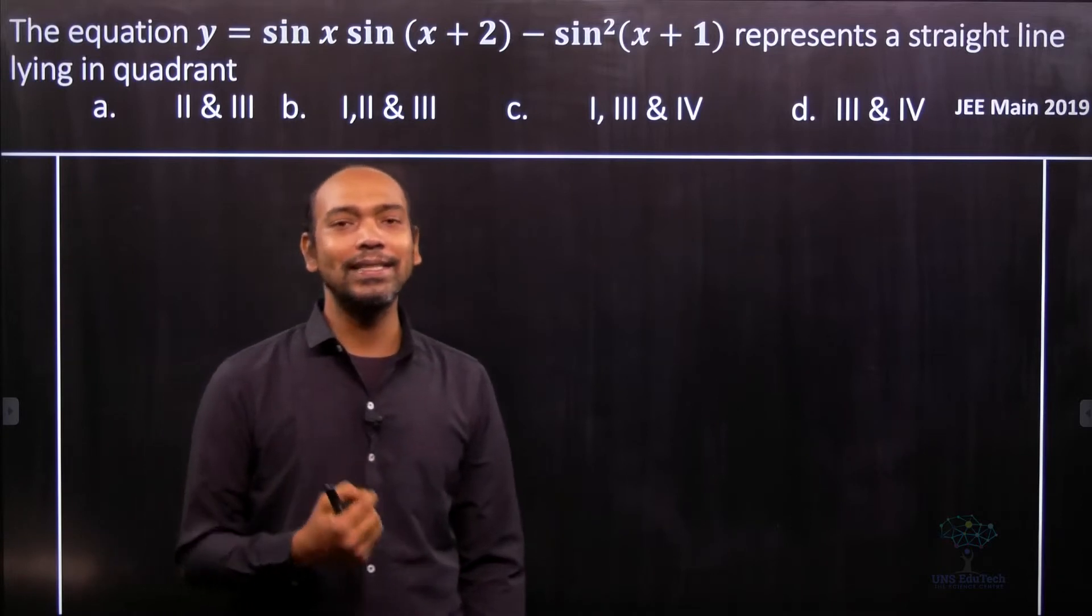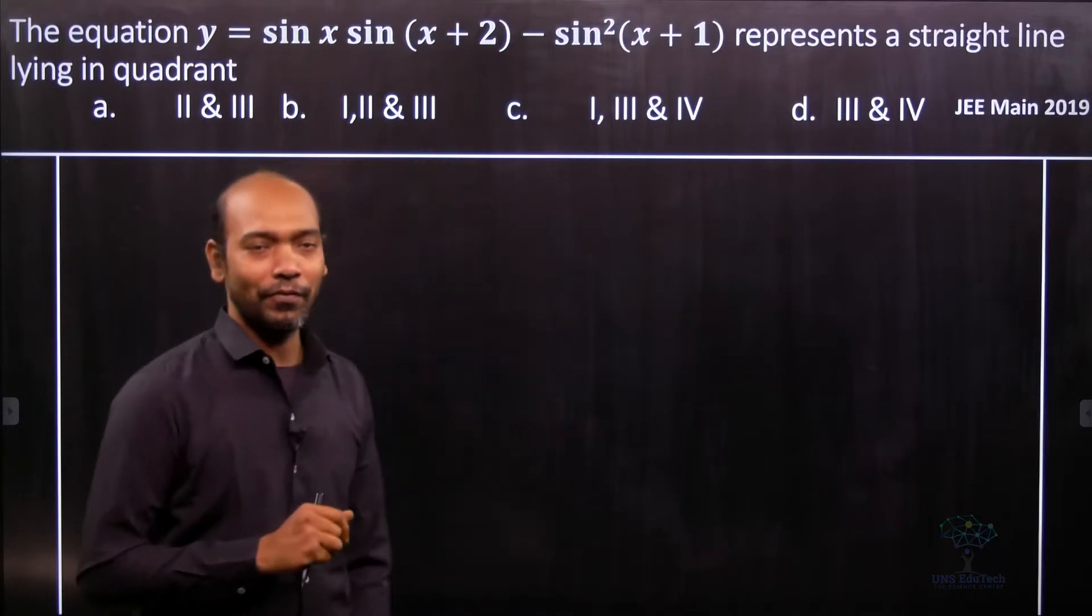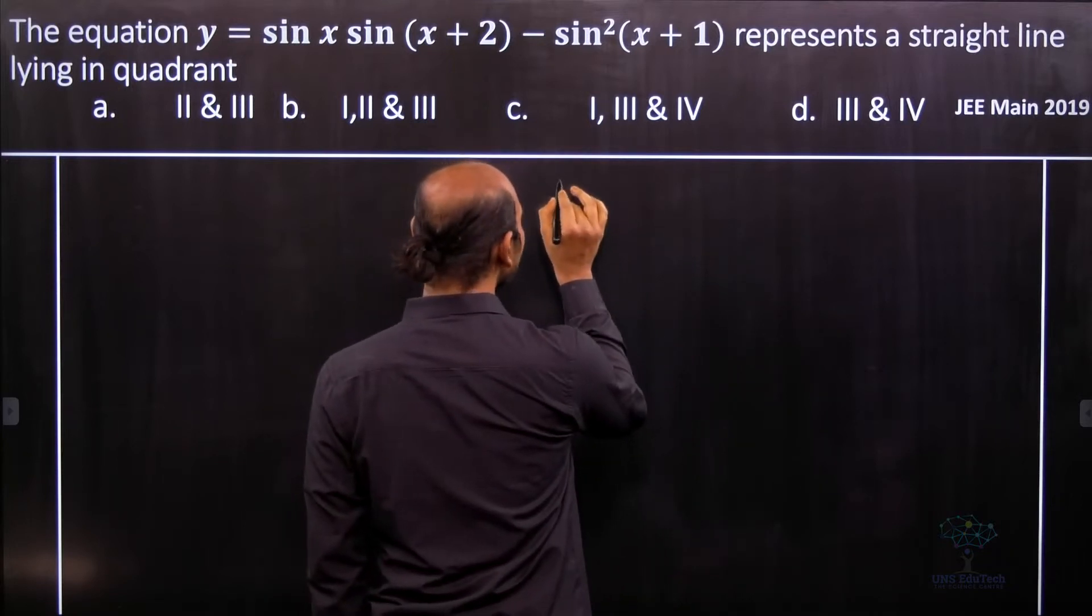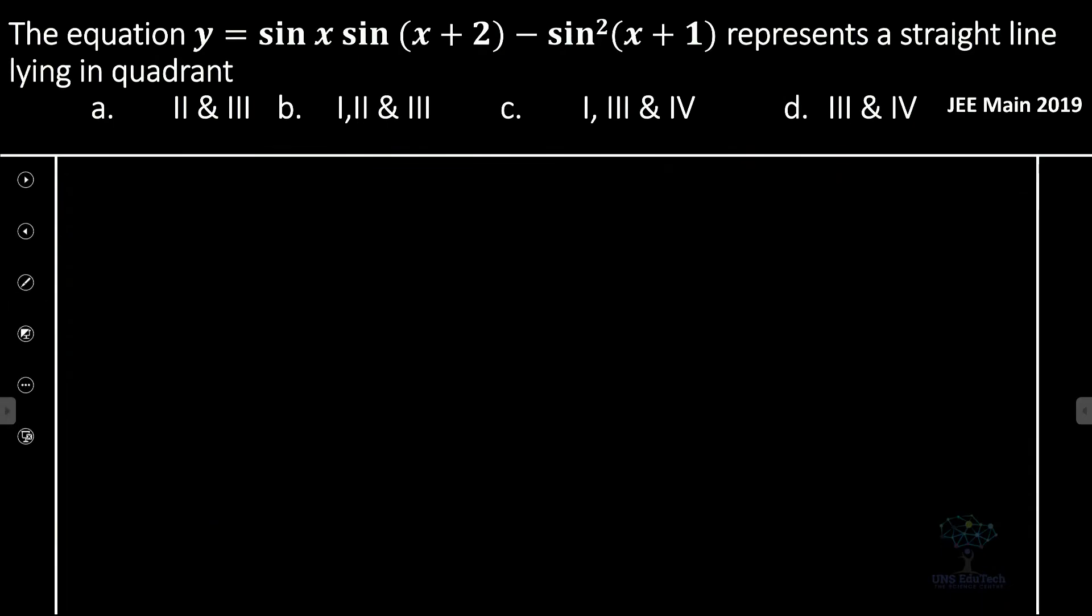Let's take the value of y. We can see that y is in sine product form, so first we write it as sine x times sine(x + 2) minus sine squared(x + 1).